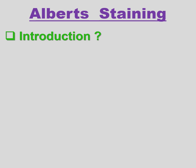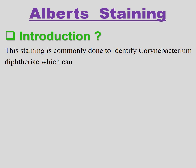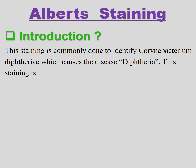Albert's staining is commonly done to identify Corynebacterium diphtheriae, which causes the disease diphtheria. This staining is also called metachromatic granules staining.